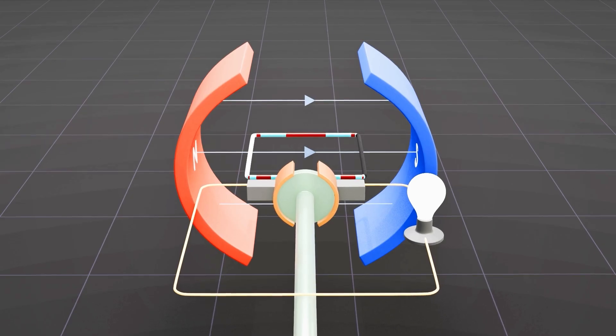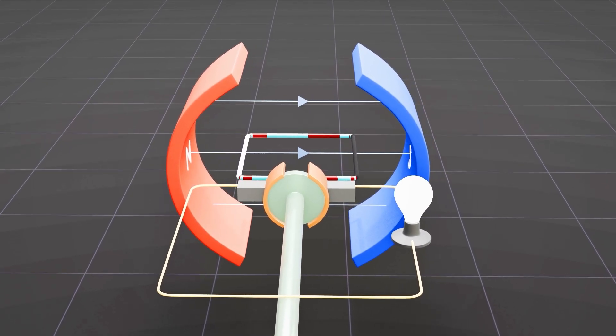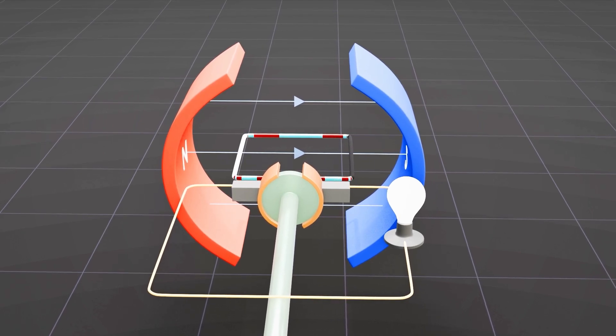This is how electric generators generate electricity, which is then added to the power grid for distribution.